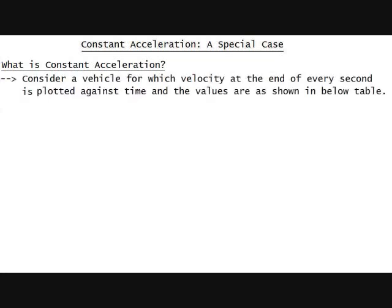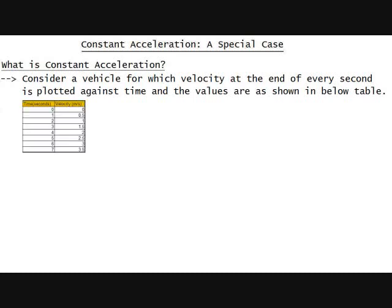We will now try to understand what constant acceleration means. Consider a vehicle for which velocity at the end of every second is plotted against time, and the values are shown in the table below.